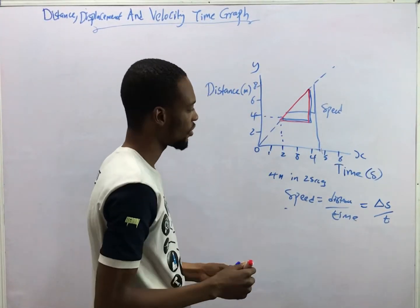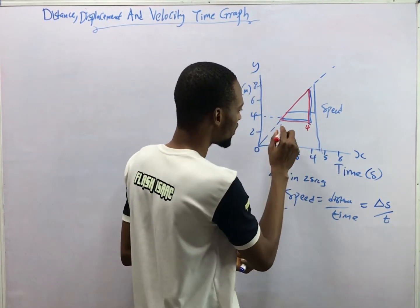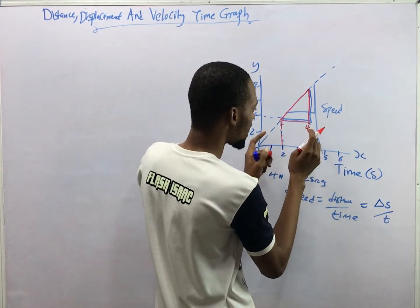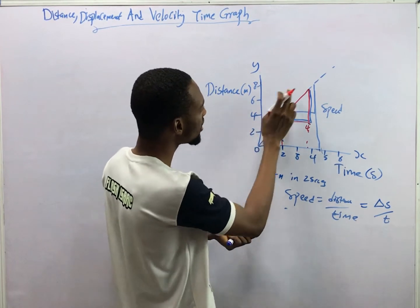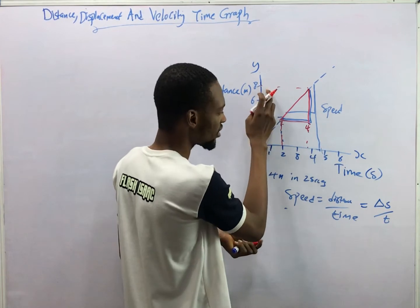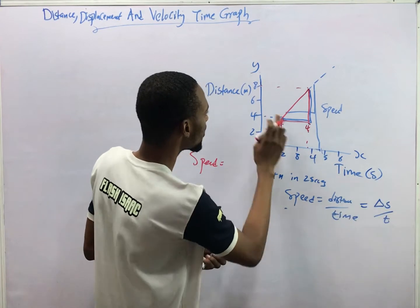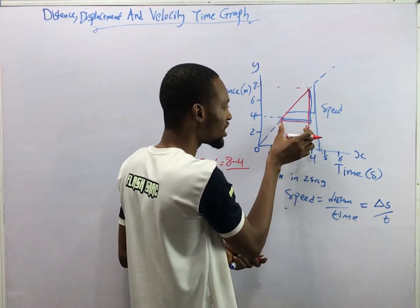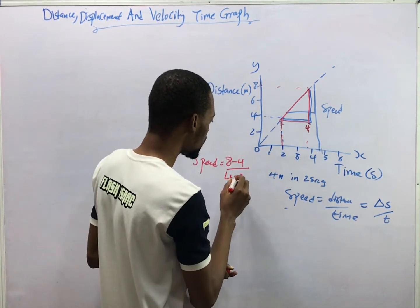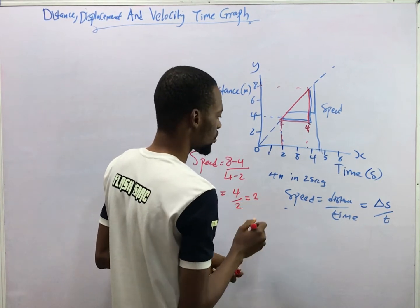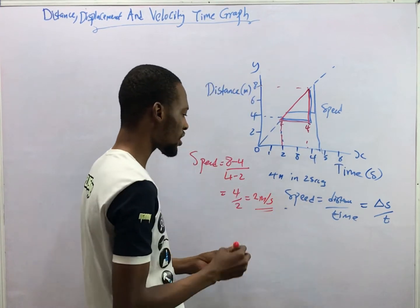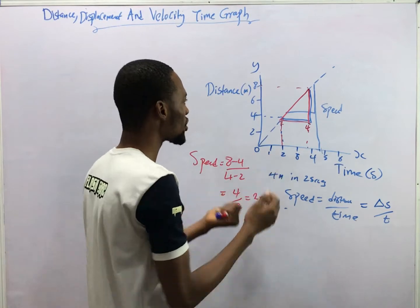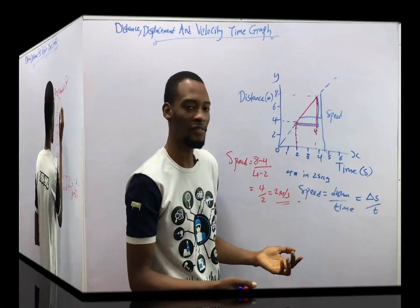Let's take a slope from the graph. If this is four seconds, the time is four, and here time is two — that's your change in time. Look here: this is four meters and this is eight meters, so the change in distance is eight minus four. Speed equals change in distance over change in time: eight minus four over four minus two, which is four over two, equals two meters per second. Anywhere you cut the graph, subtract the time and subtract the distance to get your speed. That's the distance-time graph.